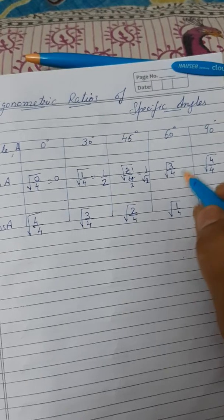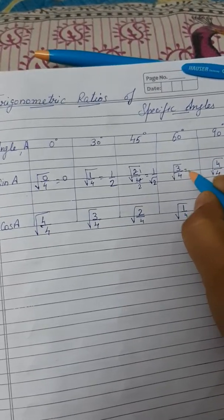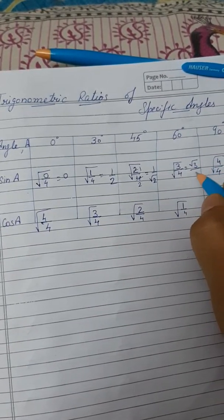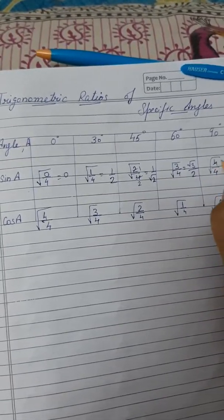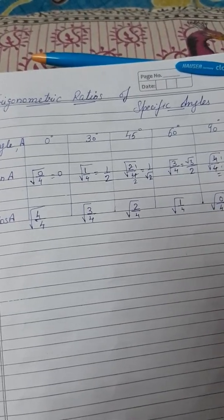Similarly, under root 3 on top will remain under root 3 because we cannot solve its square root. 4 becomes 2. And 4 by 4 that is 1, cancels out to become 1. And square root of 1 is 1.